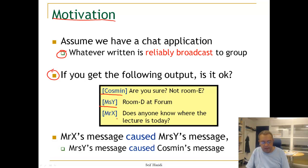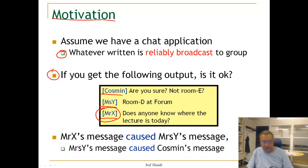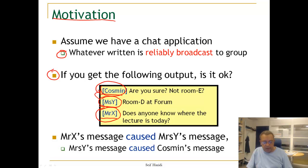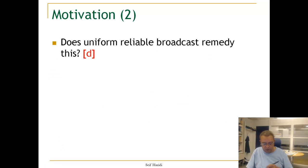And then after that, you get the message: 'Does anyone know where the lecture is today?' So evidently, the order of these messages is completely screwed up. What really happened in the system was that Mr. X asked 'Does anybody know where is the lecture today?', Ms. Y said it's room D, and then Cosman said he thought it wasn't room E. So in this case, we say that Mr. X caused Ms. Y's message, which caused Cosman's message. So there is a causality between these messages, and that is what we are going to discuss today.